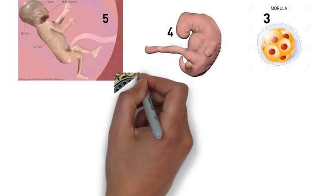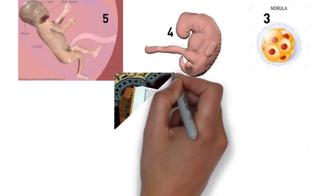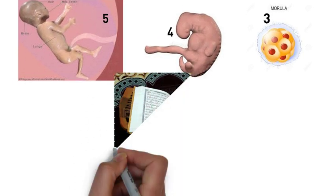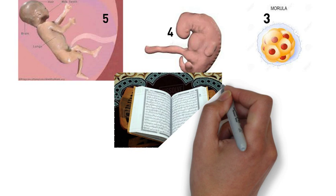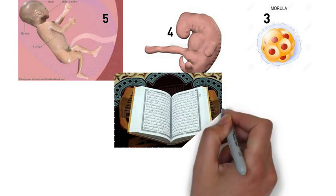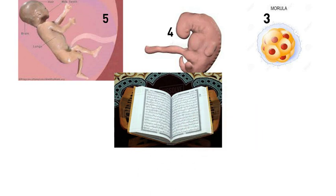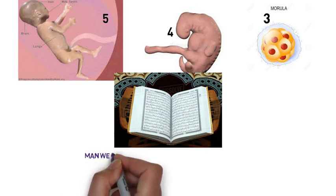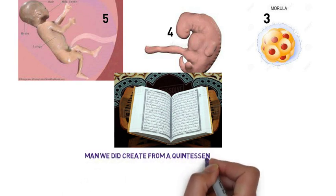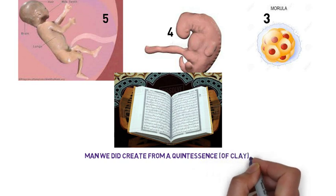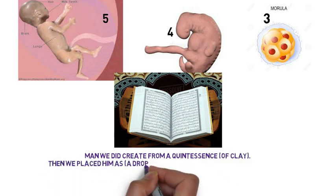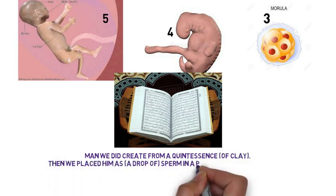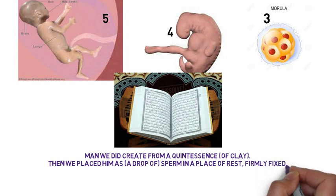More than 1400 years ago, the Holy Quran described this process of the development of an unborn human in the following verse — Chapter 23, verses 12–14: 'Man we did create from a quintessence of clay. Then we placed him as a drop of sperm in a place of rest, firmly fixed.'